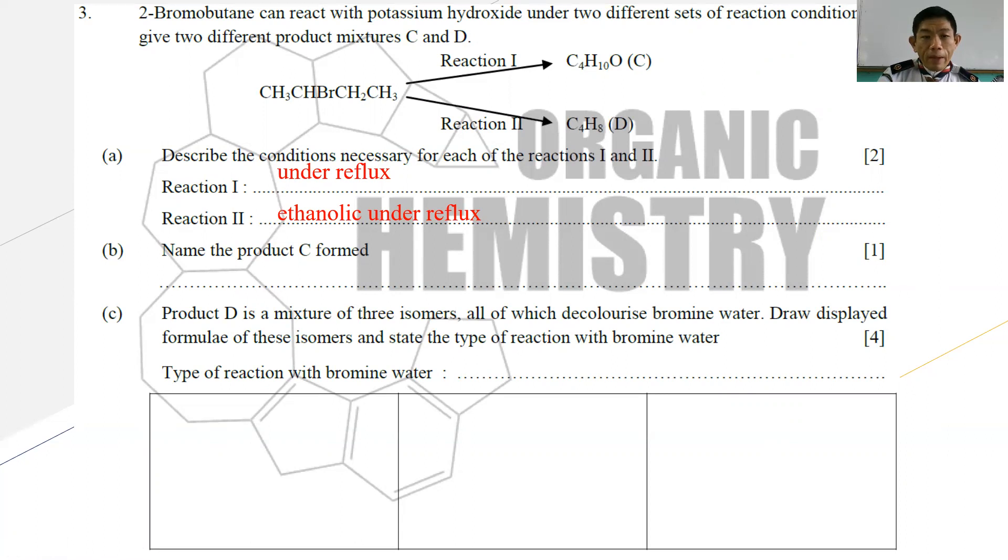Part B: Name the product C. Product C is synthesized from 2-bromobutane, so it is expected that C is butan-2-ol.